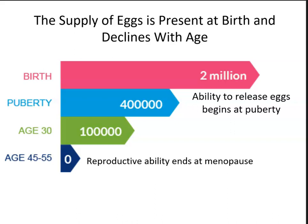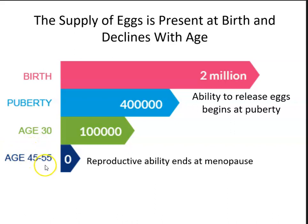The full number of eggs a woman will have is present at birth, though this number declines with age. At birth, most females have about 2 million eggs. By puberty — when the ability to release eggs begins — a female will have only about 400,000 eggs. By age 30, this declines to about 100,000. Once a woman reaches menopause, usually between ages 45 to 55, there are no more available eggs and reproductive ability ends.